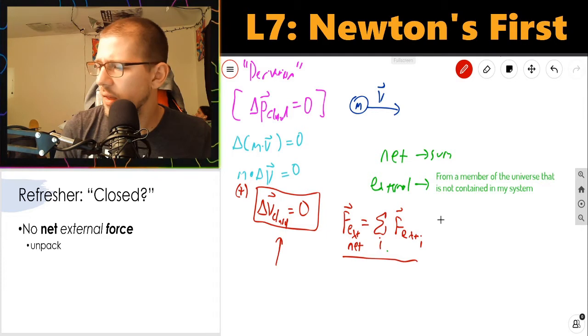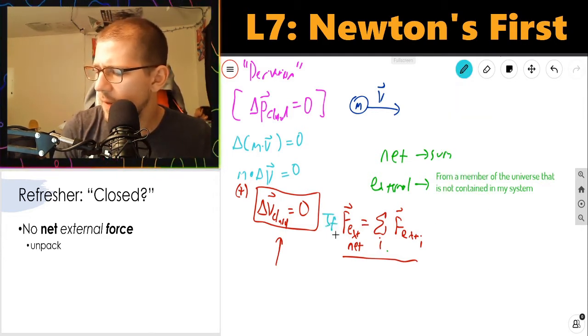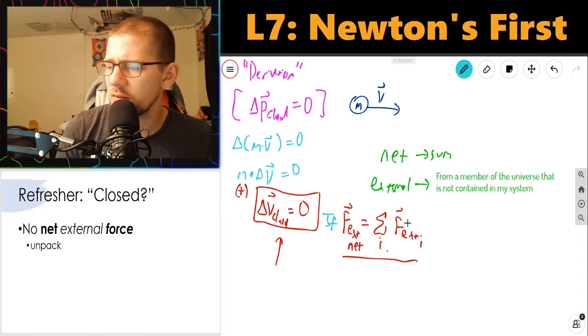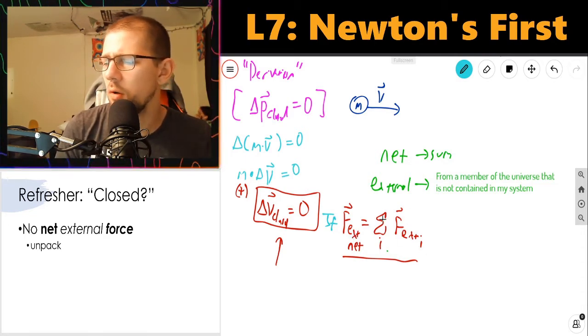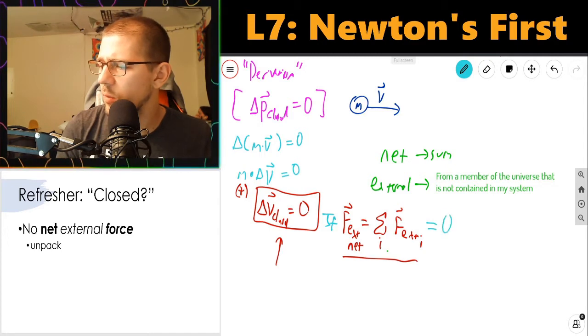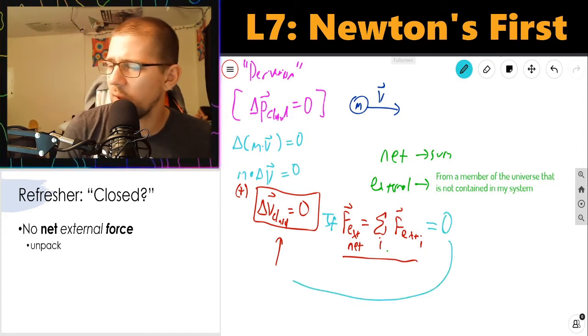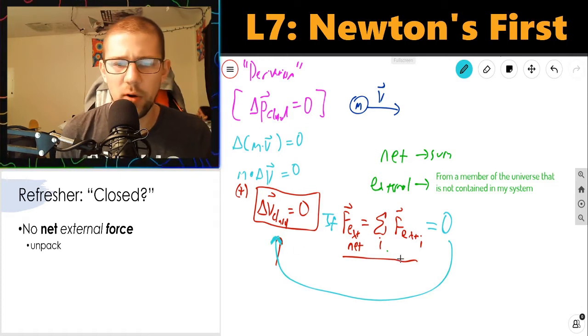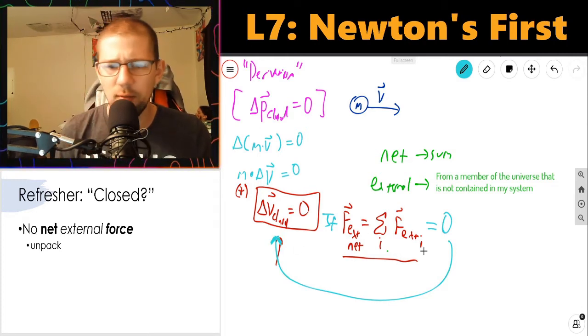I'll rephrase this a little bit. If the external net force, which is the vector sum of all external forces, is equal to zero, then we have this: the change in velocity of my system overall is zero. There's no net change in the velocity of the system.